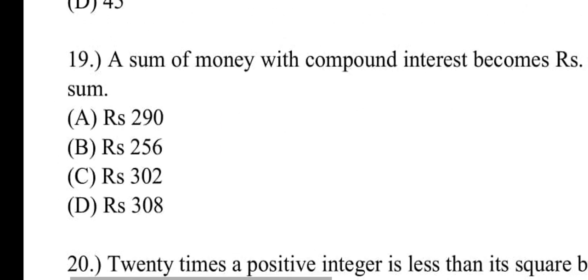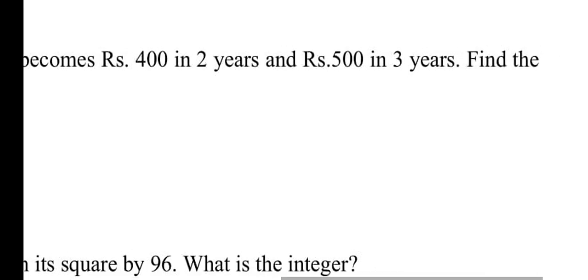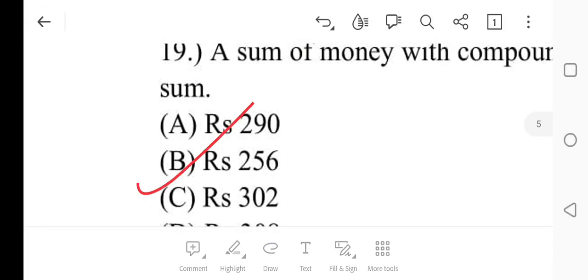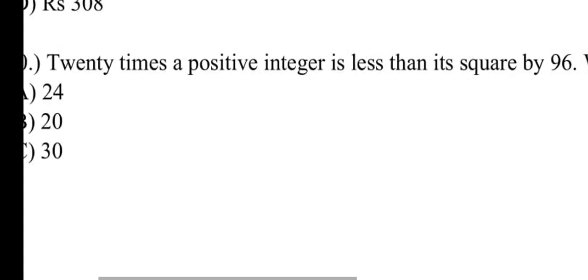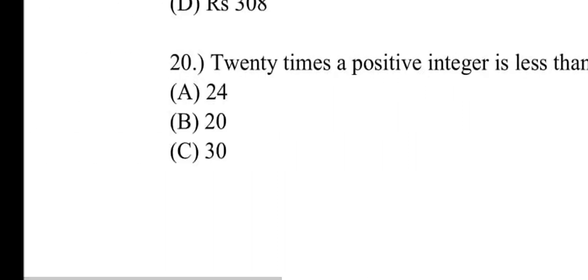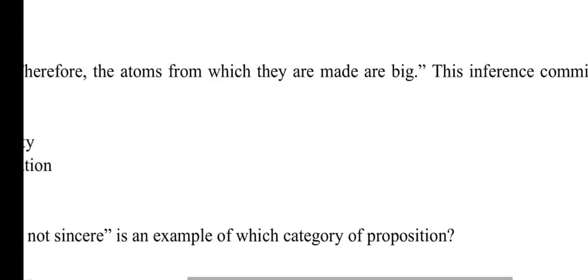Number nineteen: A sum of money with compound interest becomes Rs. 400 in 2 years and Rs. 500 in 3 years. Find the sum. Options are 290 rupees, 256 rupees, 302 rupees, 308 rupees. Number B will be correct: 256 rupees. Number twenty: 20 times a positive integer is less than its square by 96. What is the integer? Options are 24, 20, 30, 14. Number A will be correct: 24.